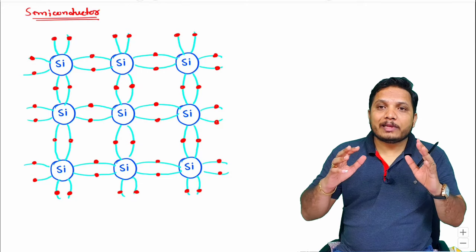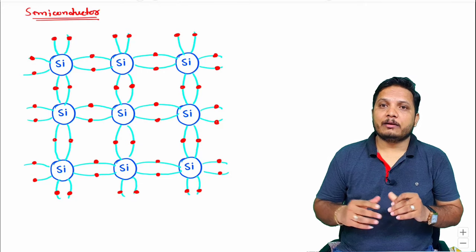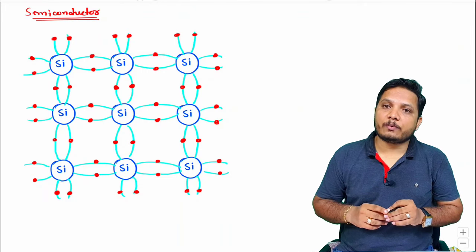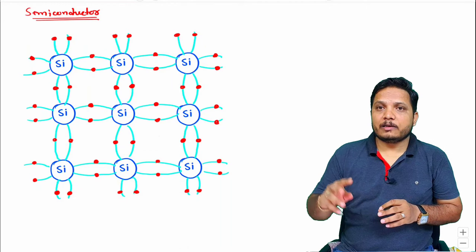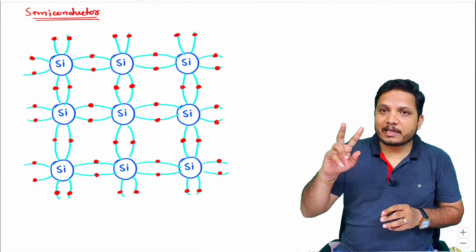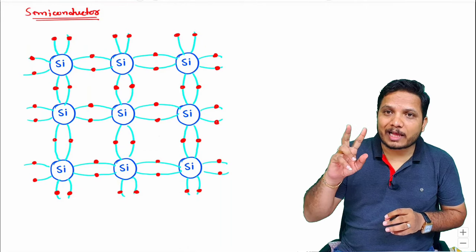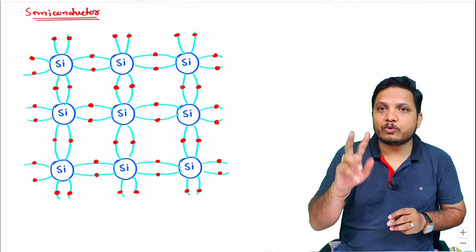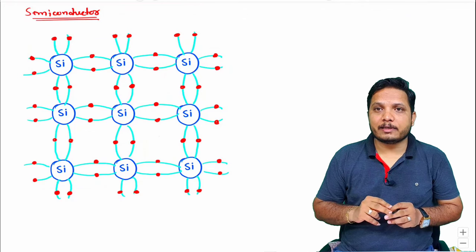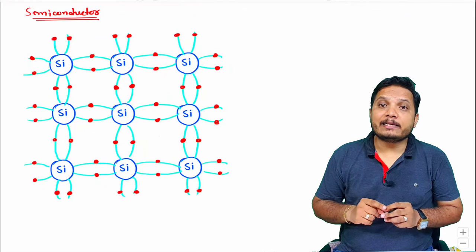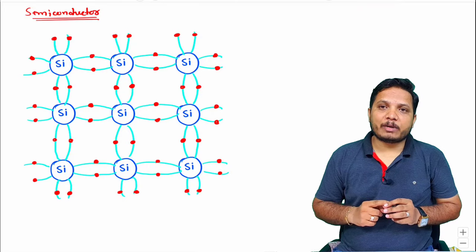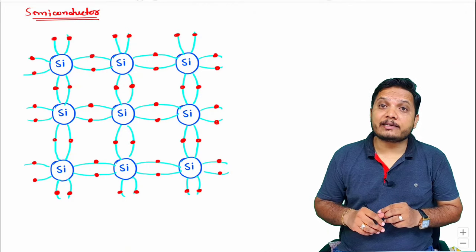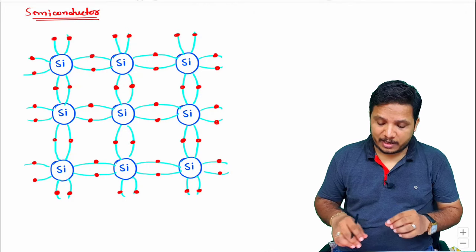Now let us try to understand the classification of semiconductor material. Basically when we want to classify semiconductor material, there are two categories: one is intrinsic semiconductor material and the second is extrinsic semiconductor material.